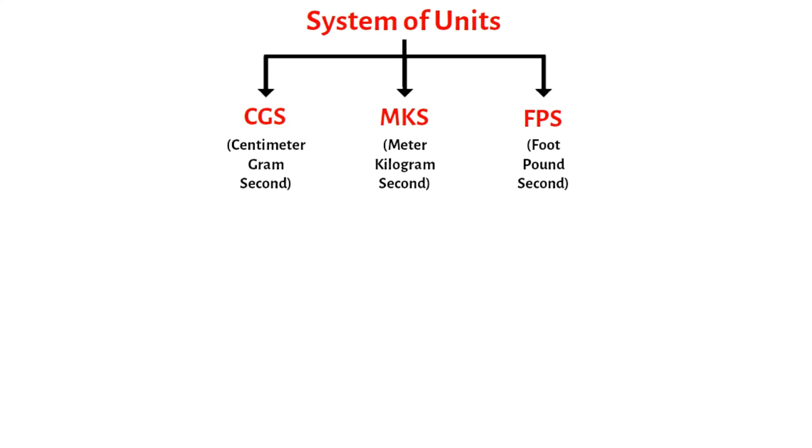Systems of Units. Basically, for a long time, three types of unit systems have been used all over the world. These systems of units are CGS, or centimeter-gram-second, MKS, or meter-kilogram-second, and FPS, or foot-pound-second.